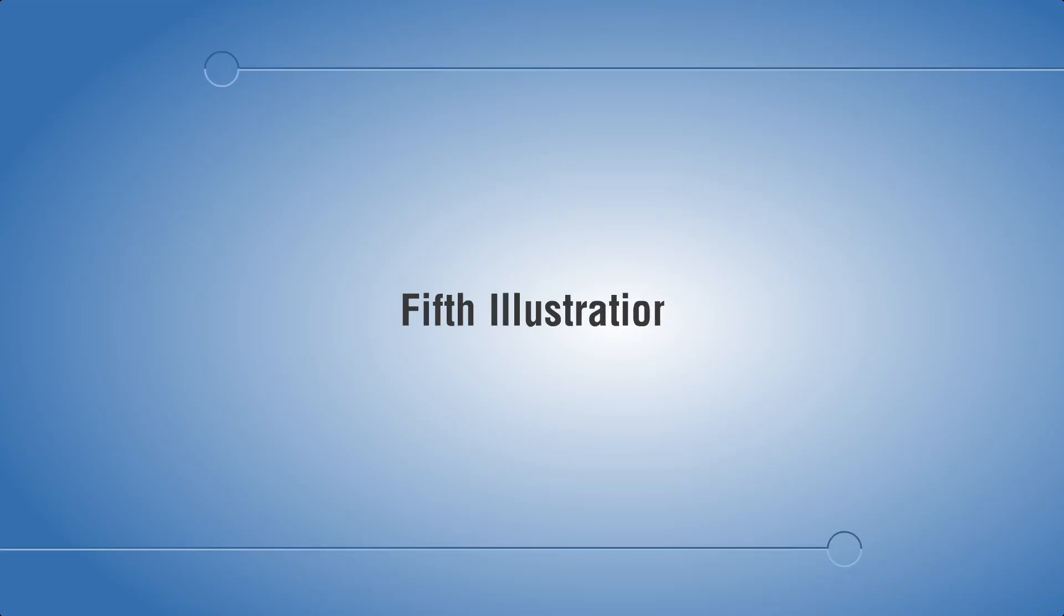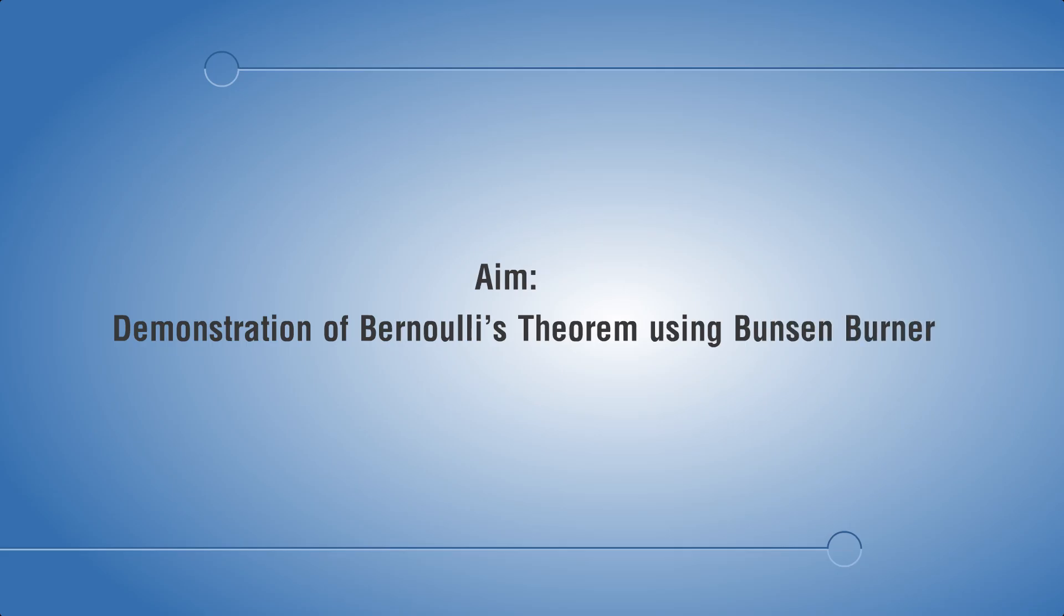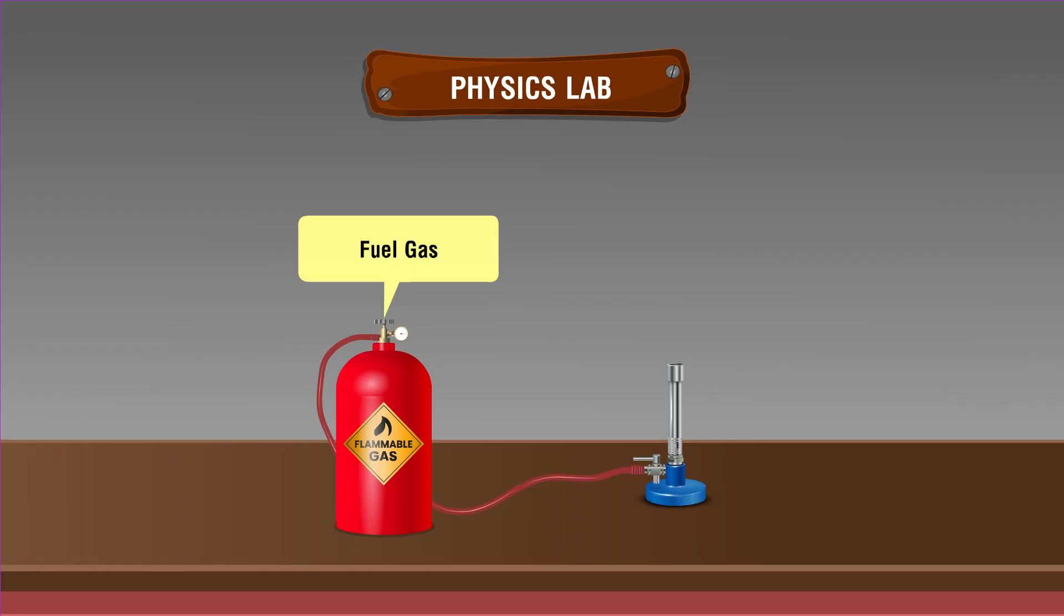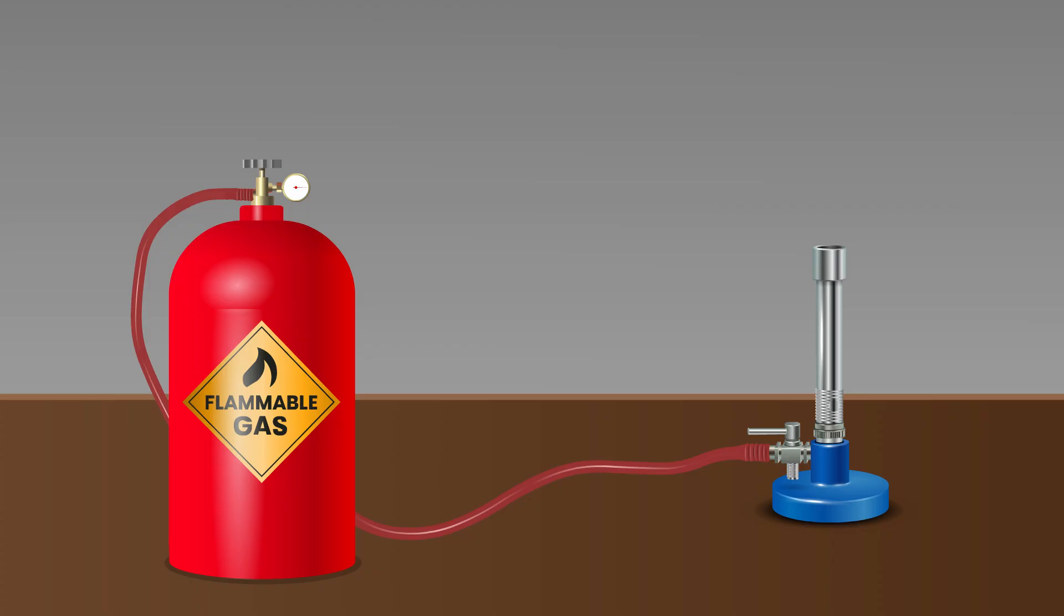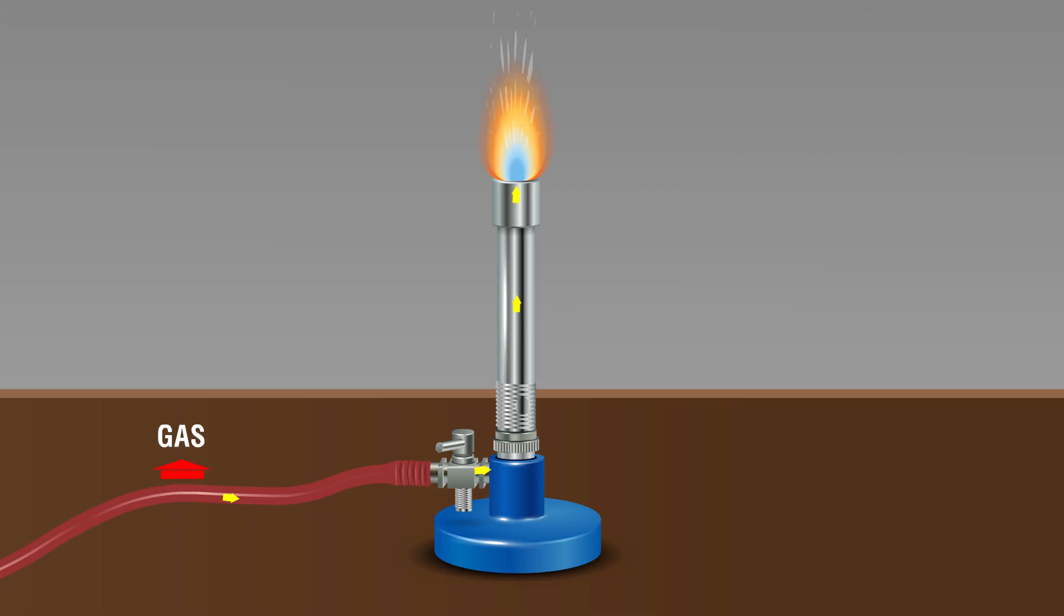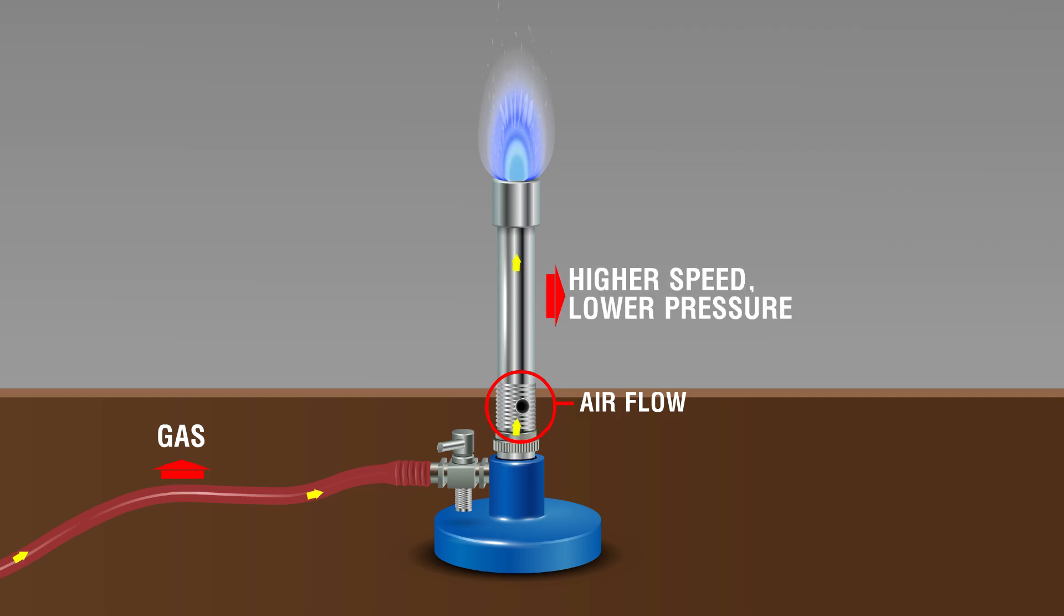Fifth illustration: aim demonstration of Bernoulli's theorem using Bunsen burner. Materials required: fuel gas, Bunsen burner. Procedure: allow fuel through rubber tube, light the burner, observe color of flame, open the holes, observe color of flame.